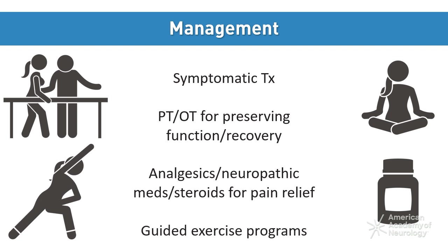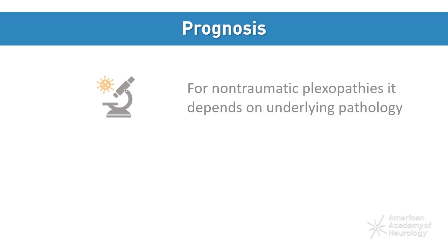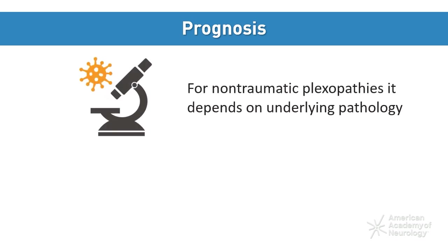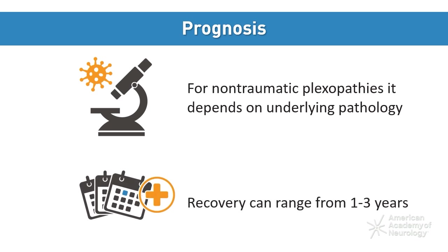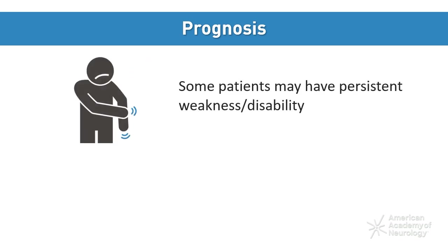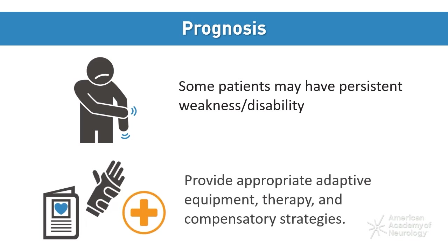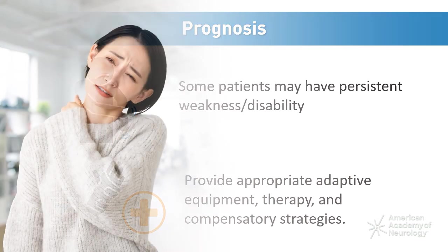The outcomes of non-traumatic plexopathies vary based on the underlying pathology. Recovery typically happens within the first year but can take as long as three years to resolve fully. Some patients may have persistent weakness and disability, so it is important to ensure they have appropriate adaptive equipment, therapy, and compensatory strategies.